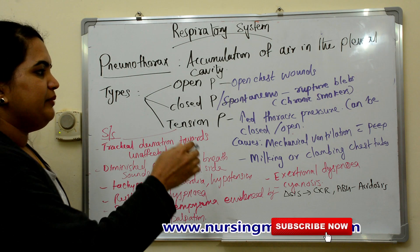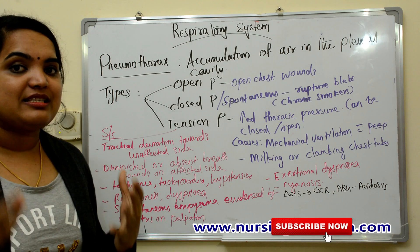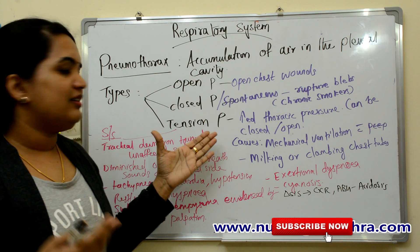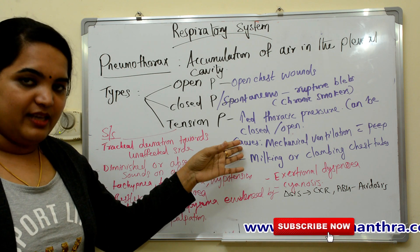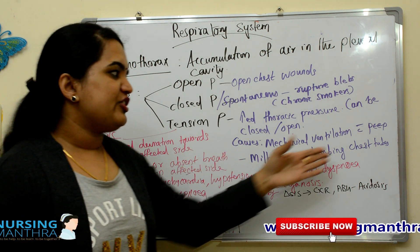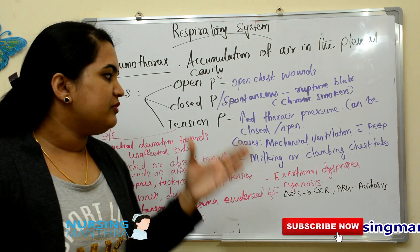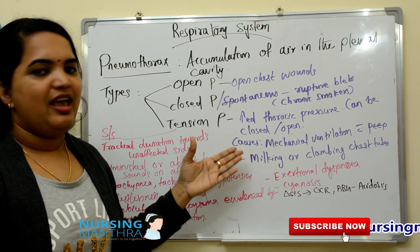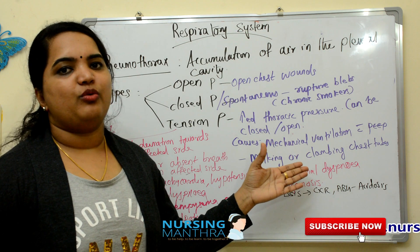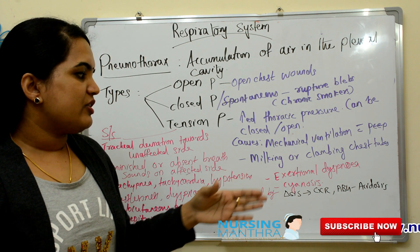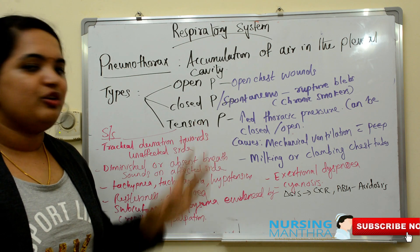Because of increased thoracic pressure — how is it increasing? The main causes are mechanical ventilation with PEEP mode, if kept on for a long time there is a possible chance, and milking or clamping the chest tube. These are the main causes of tension pneumothorax.